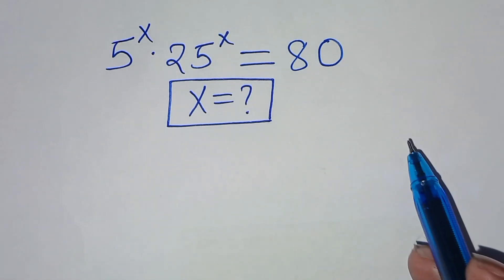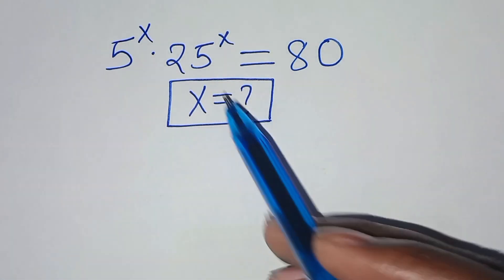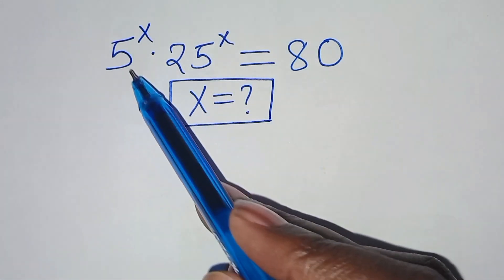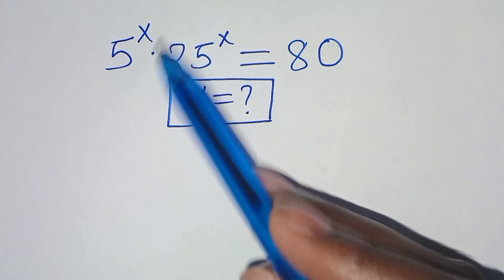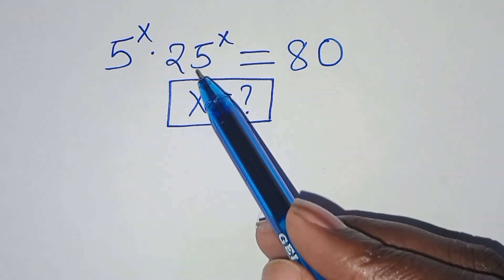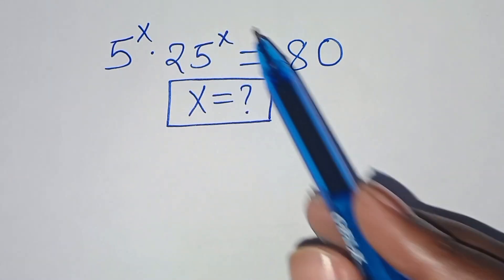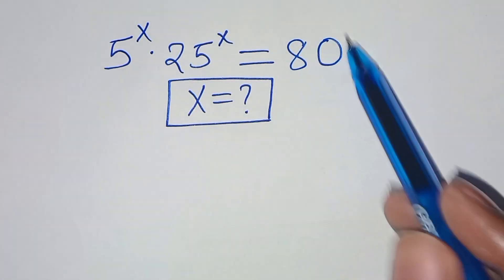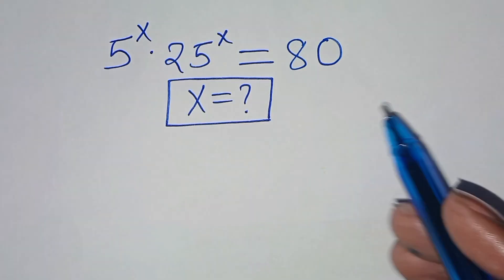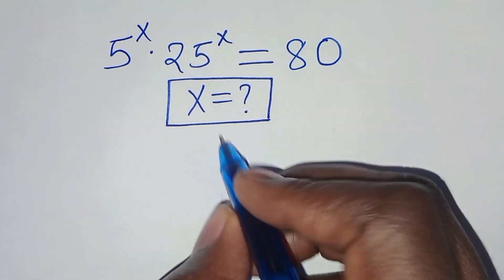Hello everyone, you are welcome to solve this nice exponential equation which is 5 to the power x times 25 to the power x. This is equal to 80. So what is the value of x?